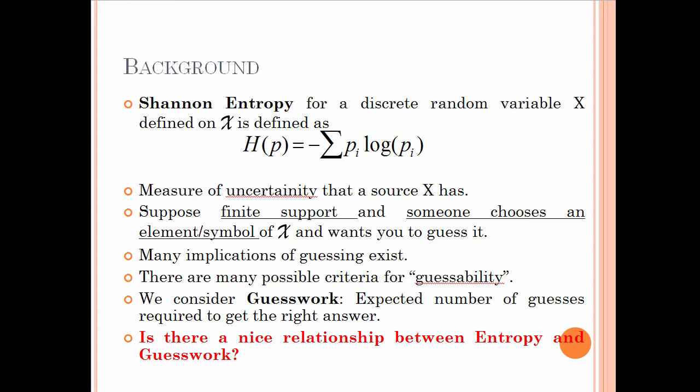Let us sort out some of this background on a slide. We shall start with the basic Shannon entropy definition for a given discrete random variable X defined on a set X. Shannon entropy is denoted by H(P) and is given by the formula where p_i is the probability of the i-th element in set X. The total formula is minus the sum of all p_i times log p_i. Entropy is a measure of uncertainty and randomness that a source X possesses.